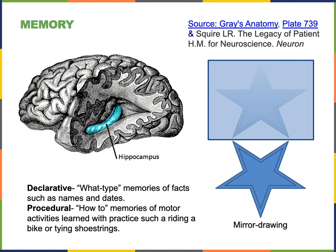We learned the importance of the hippocampus for declarative memories by studying a famous patient who had the hippocampus removed on both sides of the brain. This procedure was a treatment for severe epilepsy and was successful at treating epilepsy. However, following the procedure, this patient — known in the literature as patient HM — lost the ability to form declarative memories. At first, people thought all memory had been lost, but a scientist named Brenda Milner devised cognitive tests that demonstrated HM was still capable of forming procedural memories, even though declarative memory was lost.